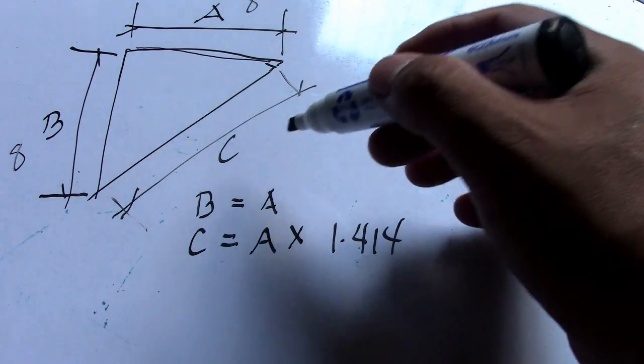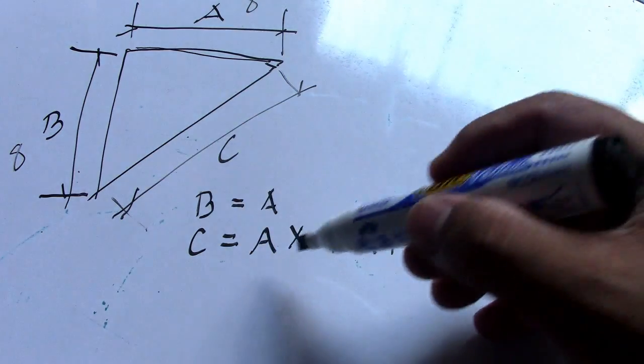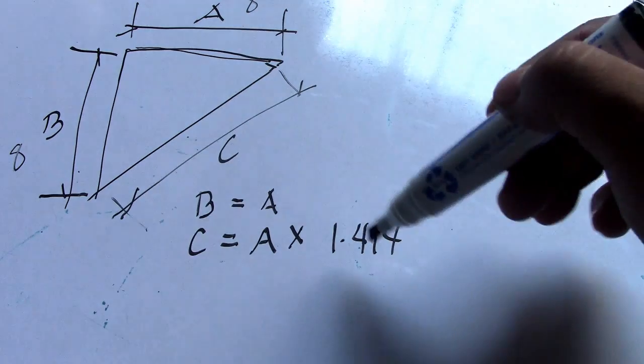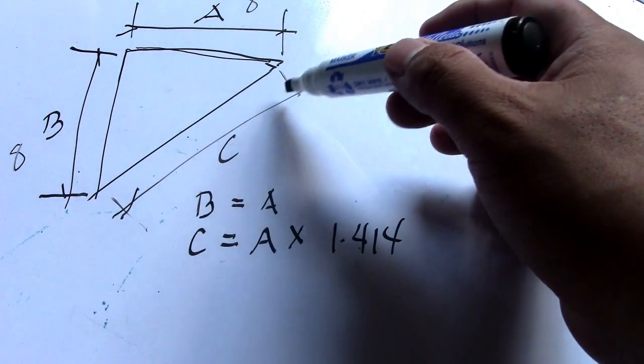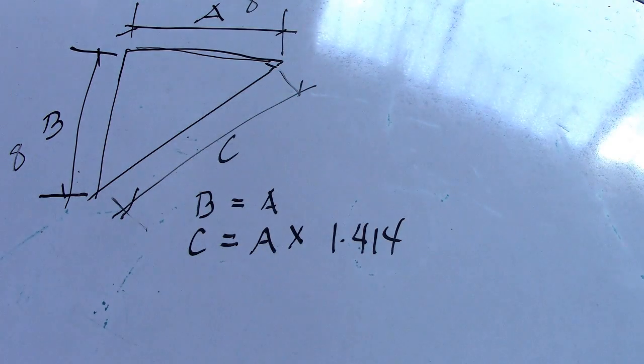So dimension C or B multiplied by 1.414 gives you the answer for letter C.